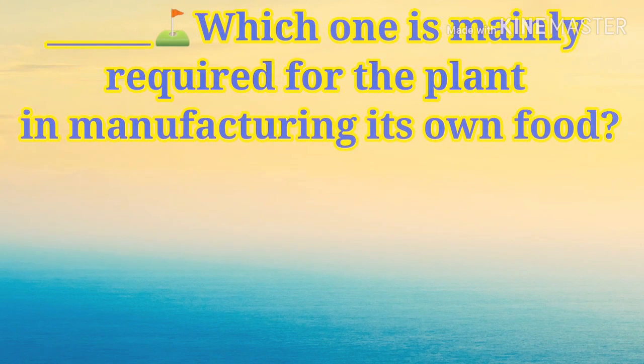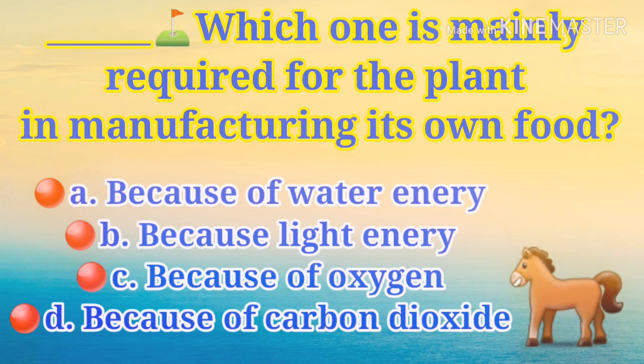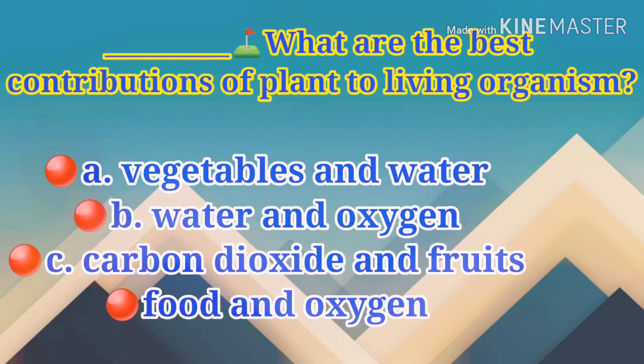You might wonder why plants can manufacture their own food. It is because of the process of photosynthesis — the main source of energy — which allows plants to produce their own food. This relies on interaction with non-living components such as sunlight, air, and water. Animals, however, cannot make their own food and depend on other organisms and on plants for oxygen.